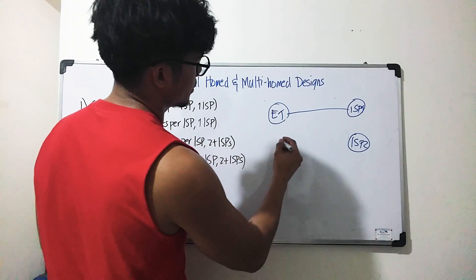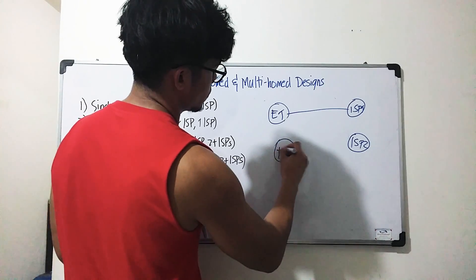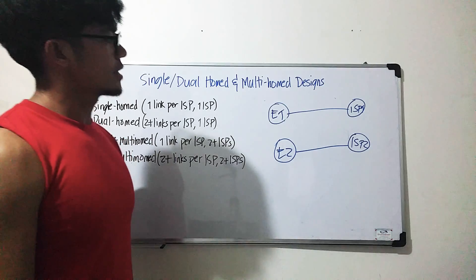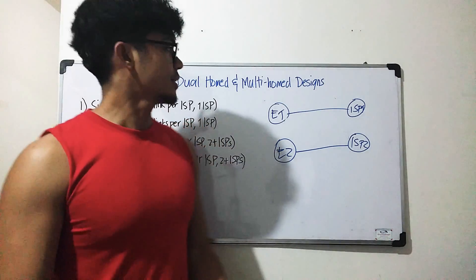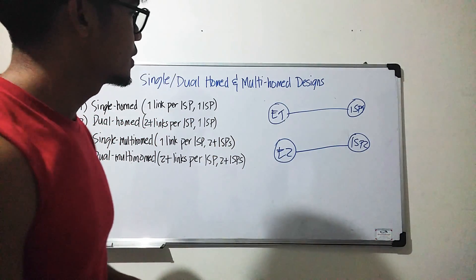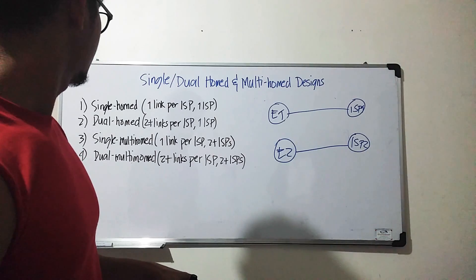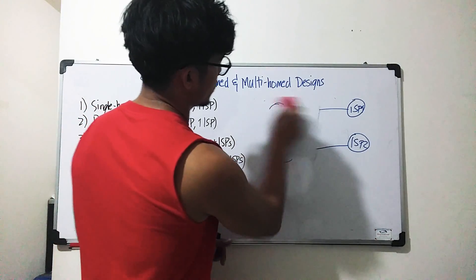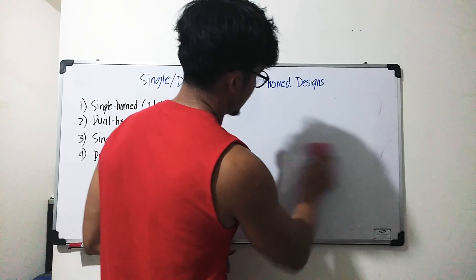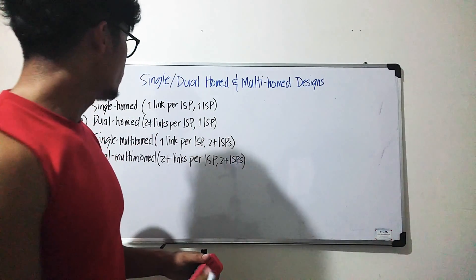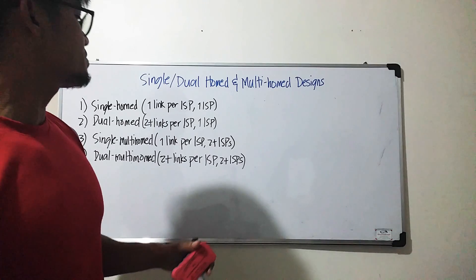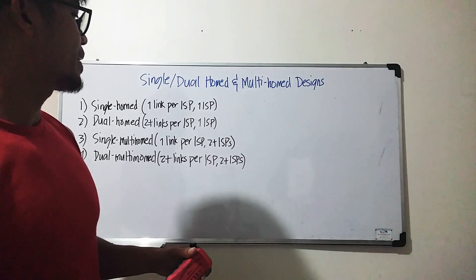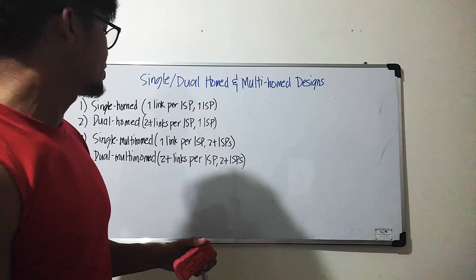We can also have this kind of topology connected to multiple ISPs. And lastly, number four is dual multi-homed — basically two or more links per ISP, and we can have two or more ISPs. An example of that would be as follows.